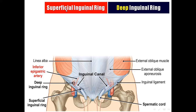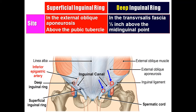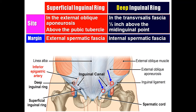Let us start by comparing the superficial inguinal ring with the deep inguinal ring. The superficial inguinal ring is an opening in the external oblique aponeurosis, above the pubic tubercle. The deep inguinal ring is an opening in the transversalis fascia, half an inch above the mid-inguinal point, located lateral to the inferior epigastric artery.